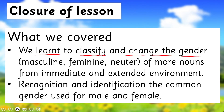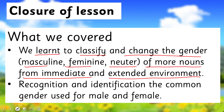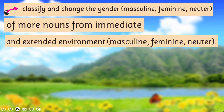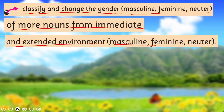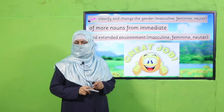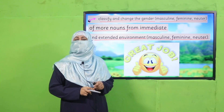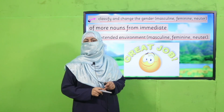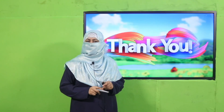What we learned today: we learned to classify and change the gender — masculine, feminine, and neuter — of more nouns from immediate and extended environment. We also learned to recognize and identify the common gender used for both male and female. This way we achieved our SLO. That's it for today — tomorrow I'll come again with a very interesting lesson. Keep learning, keep practicing, take very good care of yourself and all the people around you. Thank you, and Allah Hafiz!